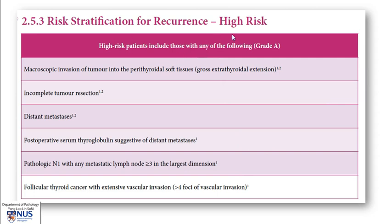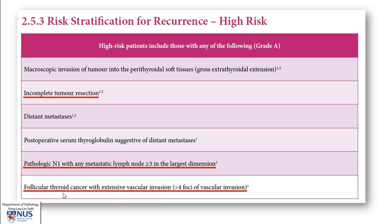Here is an example of some of the risk factors which denote a higher risk of recurrence. These factors combine examination by the clinicians, surgeons, radiology, as well as pathology. Those that we can assess on the pathology report include incomplete tumor resection — in other words, tumor margin status — then pathologic lymph node status, where we can examine lymph nodes microscopically for metastases and measure their size. In follicular thyroid cancer, we can also count the number of vessels involved by vascular invasion, which is a very important prognostic factor.